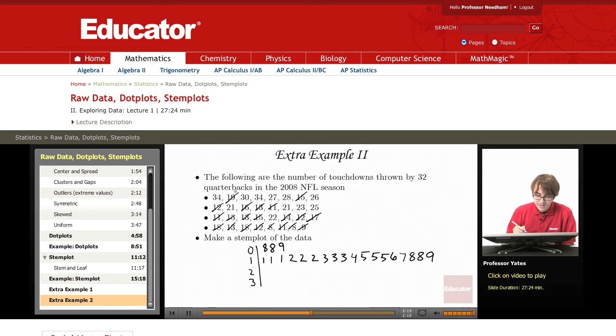Okay, so now in the 20s, we don't have anything that's 20, but we have two 21s. We have a 22, a 23, a 25, a 26, a 27, and a 28.